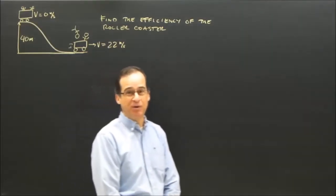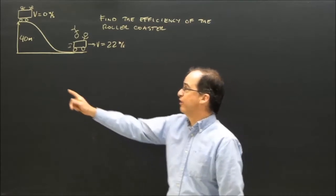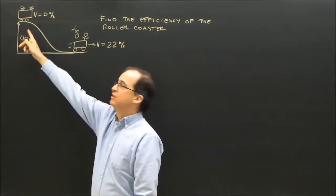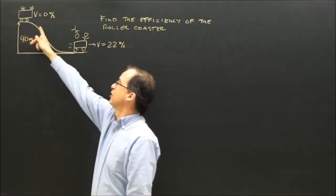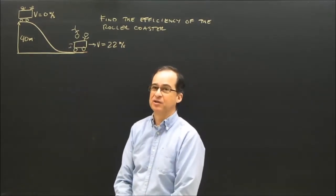We're going to start with a simple efficiency problem. I've got a roller coaster here. It's 40 meters up at the top of the hill, and it's going to come down the hill and end up going 22 meters per second when it gets to the bottom.